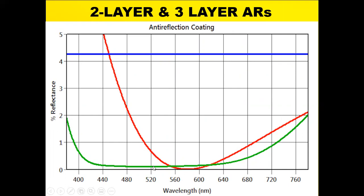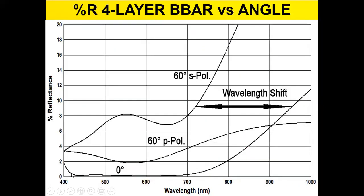That same curve for the broadband AR is this curve down at the bottom here at normal incidence or zero degrees incident. But if I tilted that at 60 degrees, I'd get these fairly ugly curves here for the P and the S polarization.